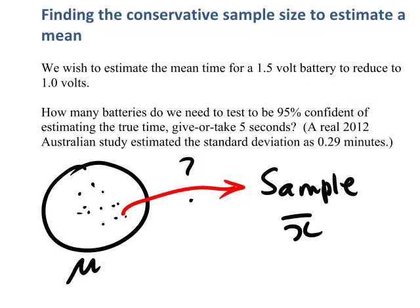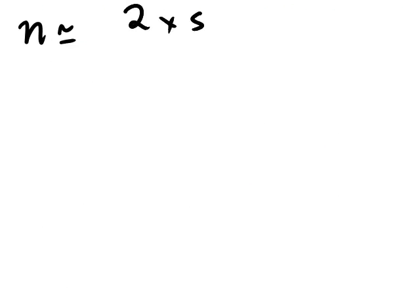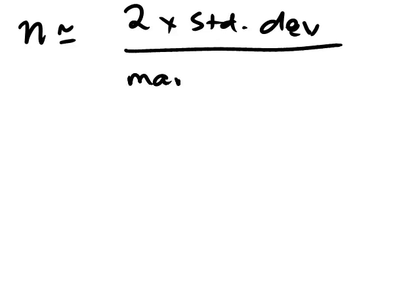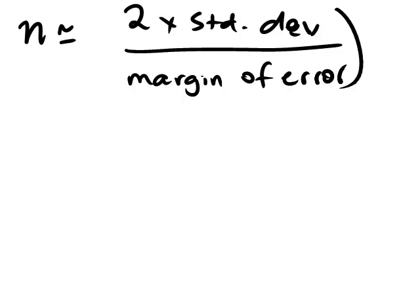So in this case, there's an approximate formula that we can use for the sample size. That formula is: n, the sample size, is approximately equal to 2 times the standard deviation divided by the margin of error, all squared. Note that this is an approximate formula that only works for 95% confidence.